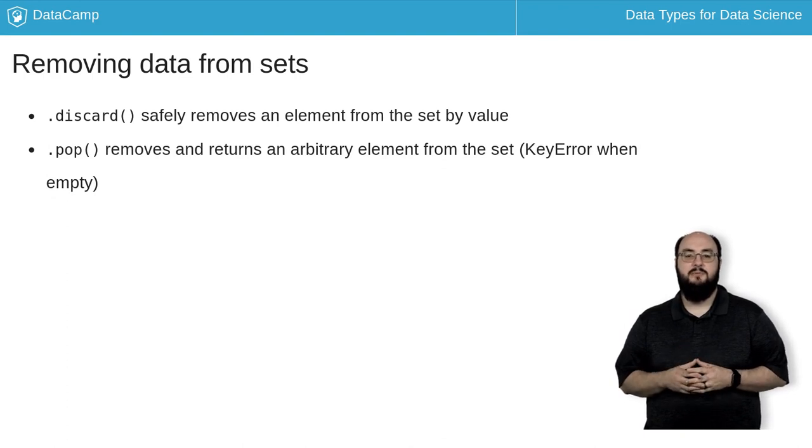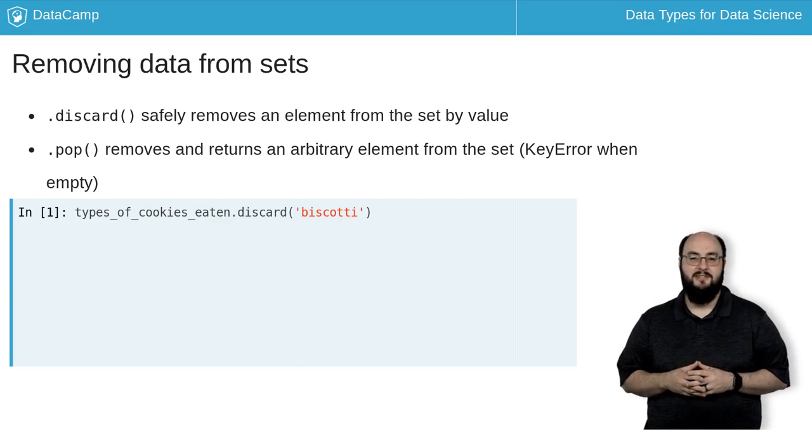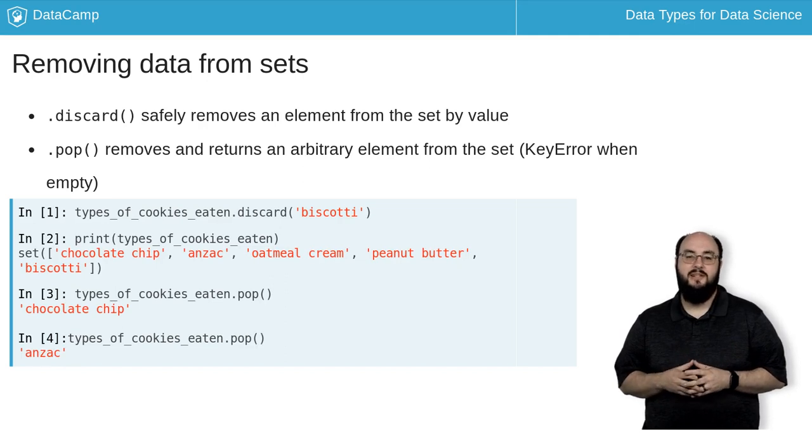Let's remove with the discard method, the biscotti, as Hugo and I had some debate about whether or not this was even a cookie. We'll then print the set. Next, we'll pop two cookies out of the list to decide what we could eat next.